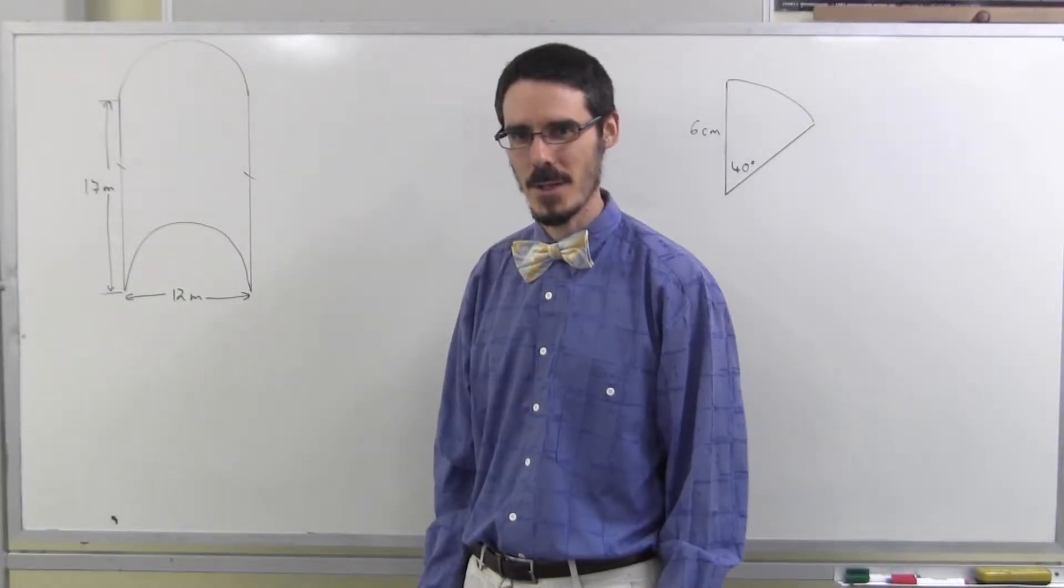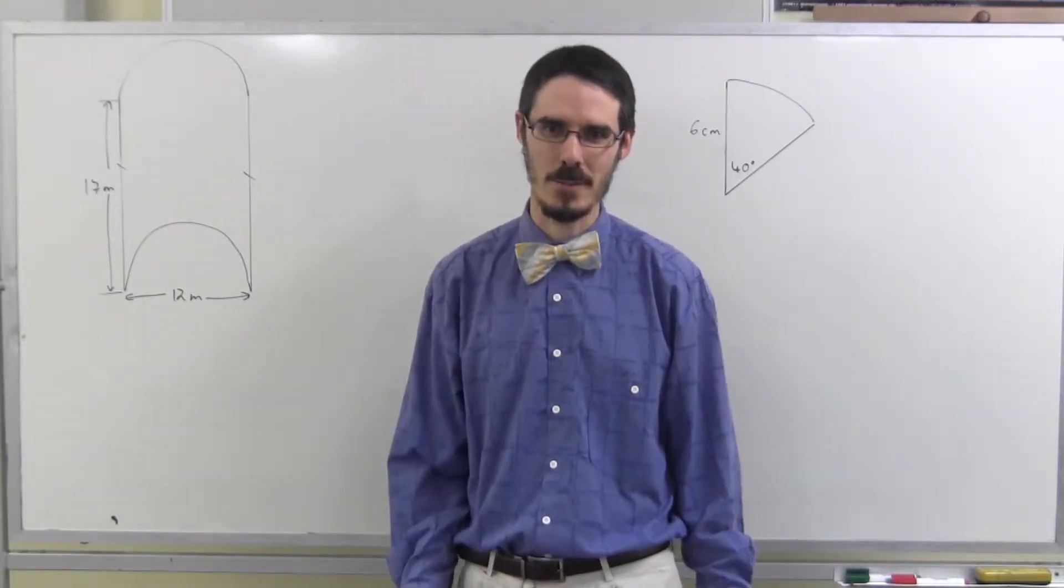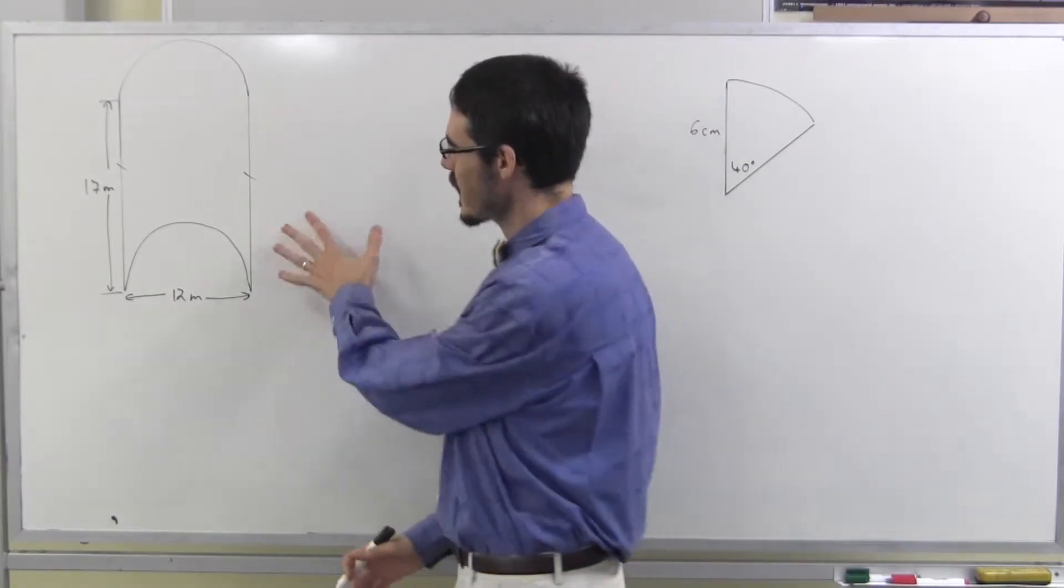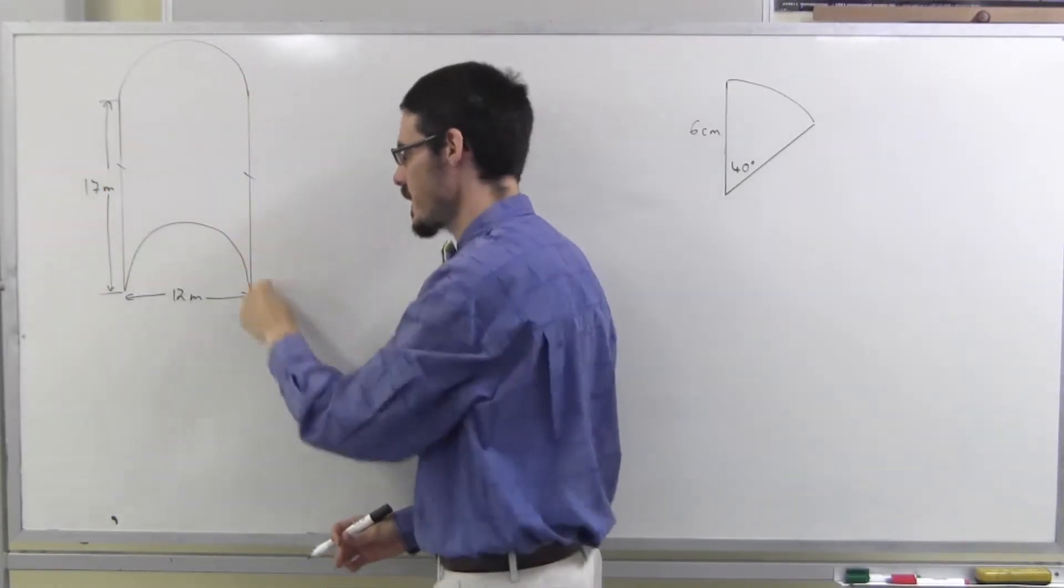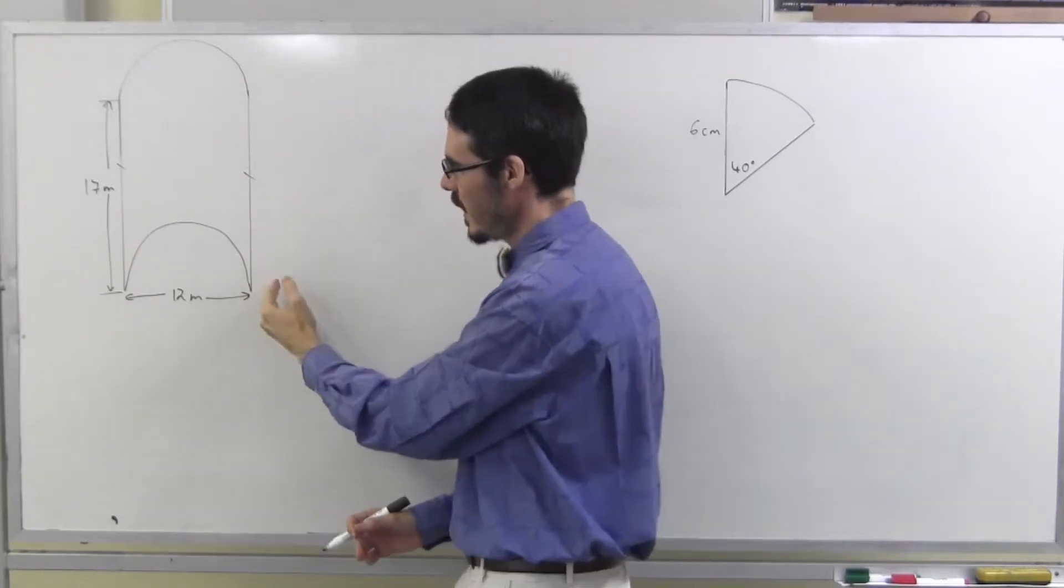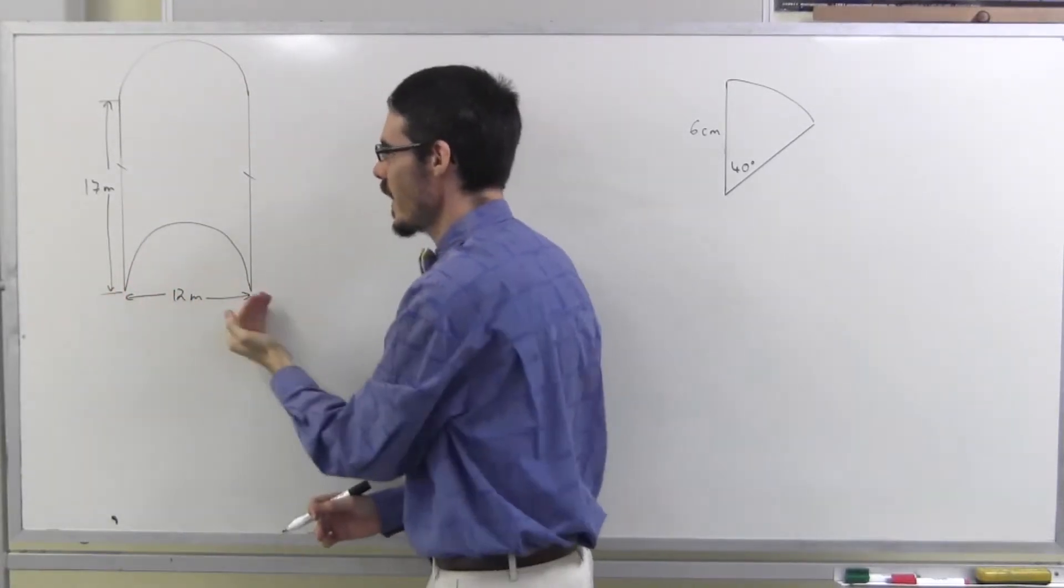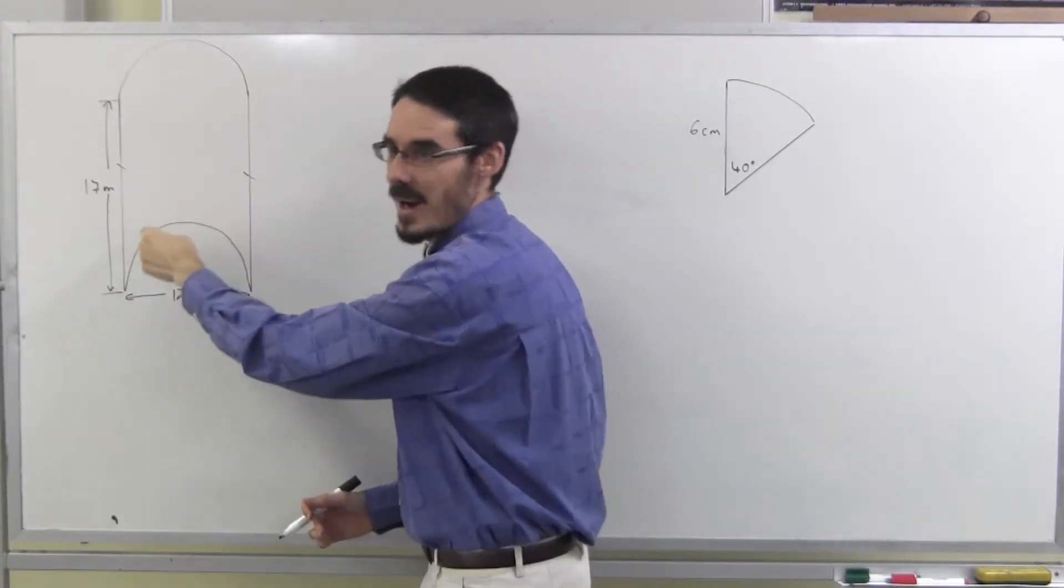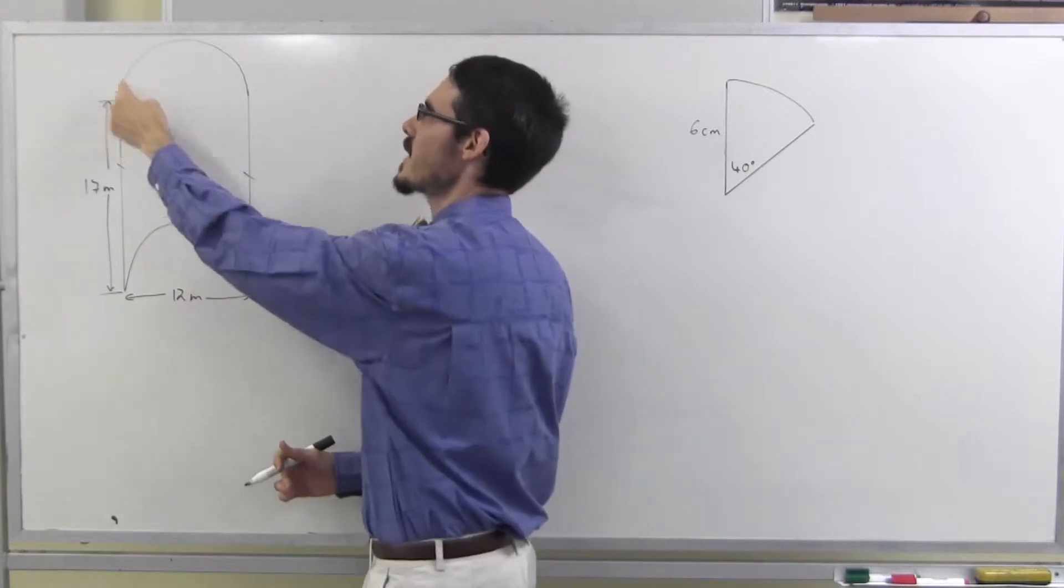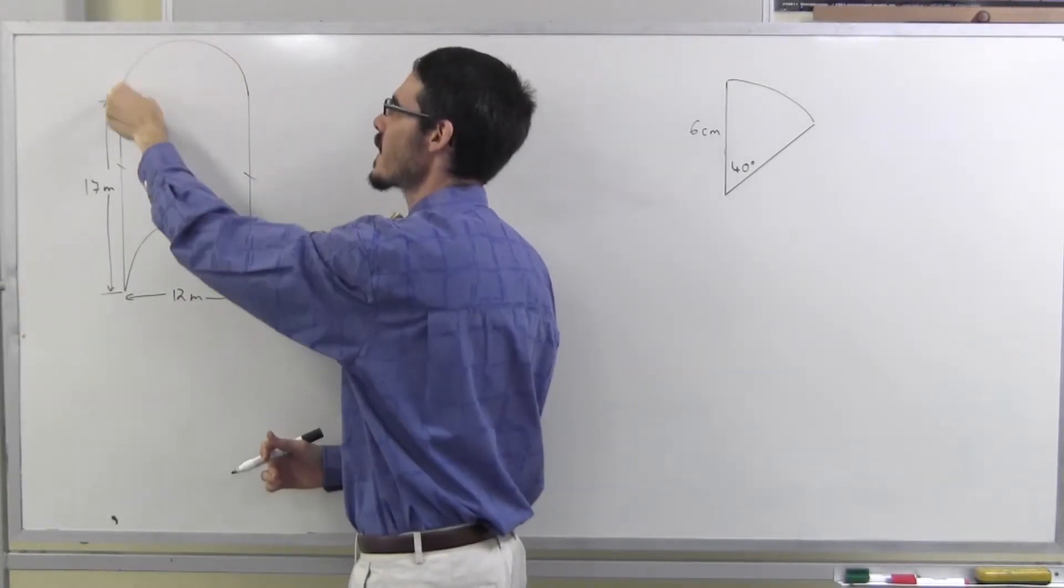Now some shapes with circles in them, or bits of circles. Now look at this diagram here. I've got two straight sides, 17 metres, the shape is 12 metres wide, but there's a circular piece cut out here, well actually half a circle, and there's this half a circle piece added on at the top.